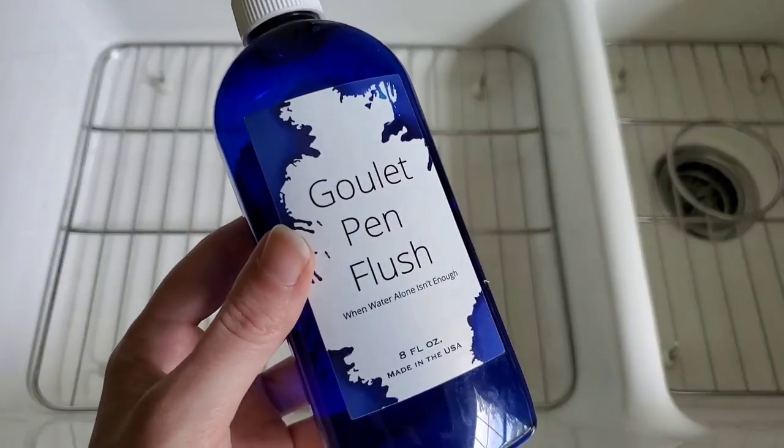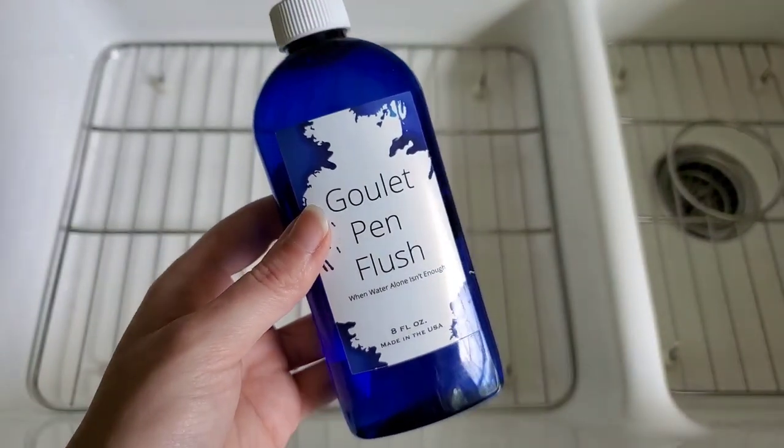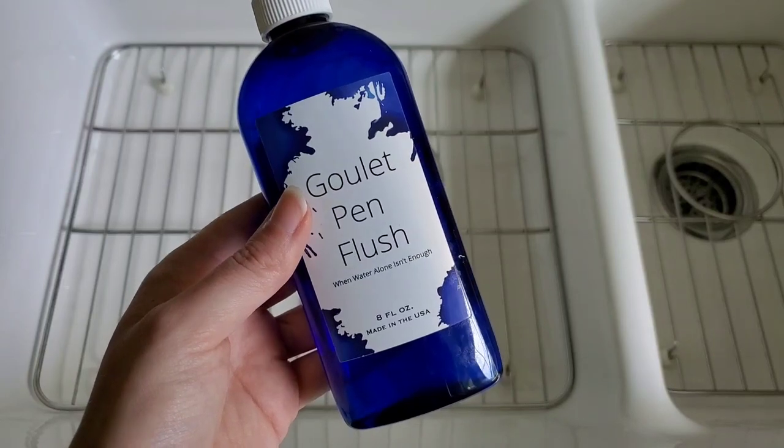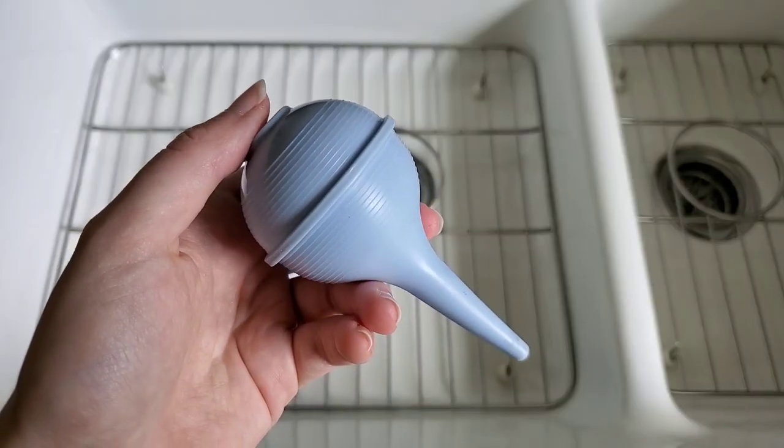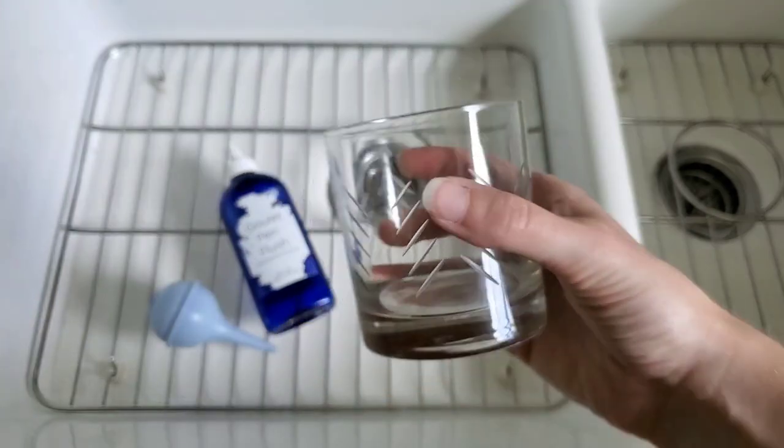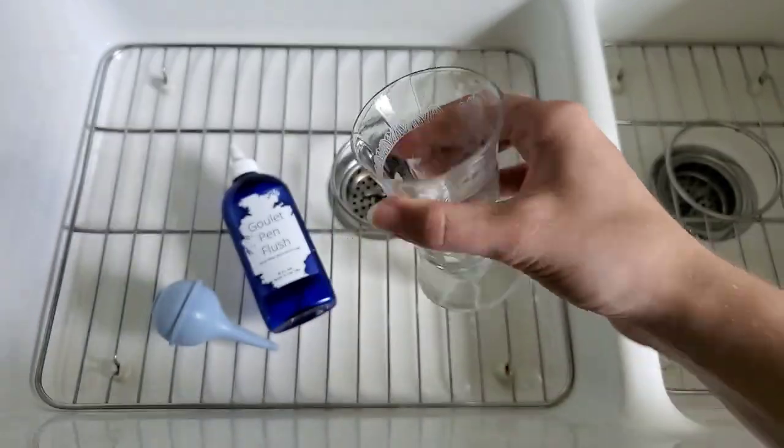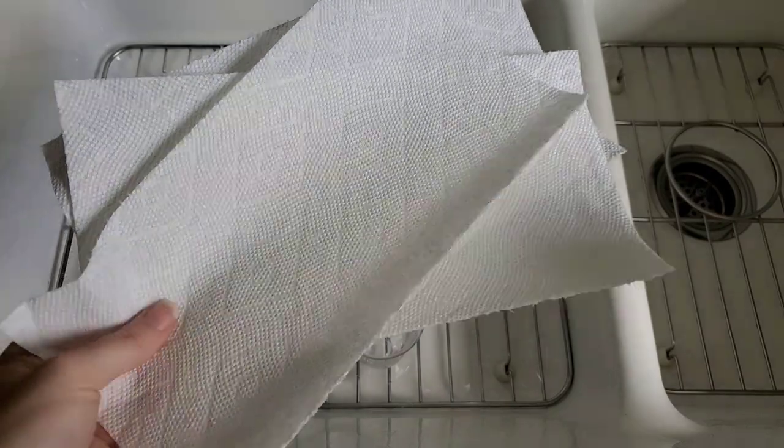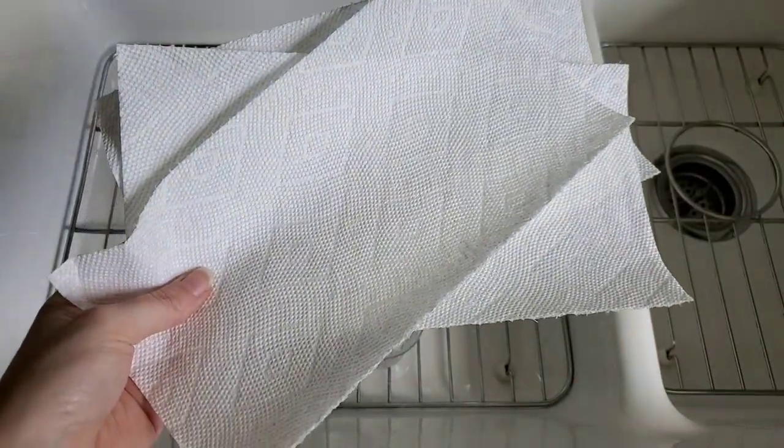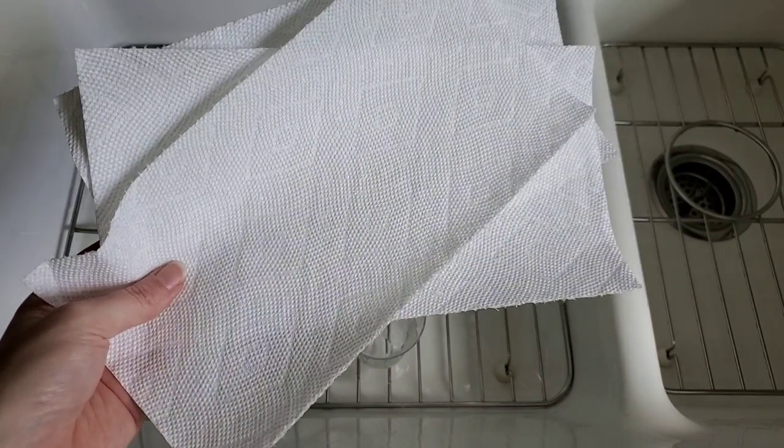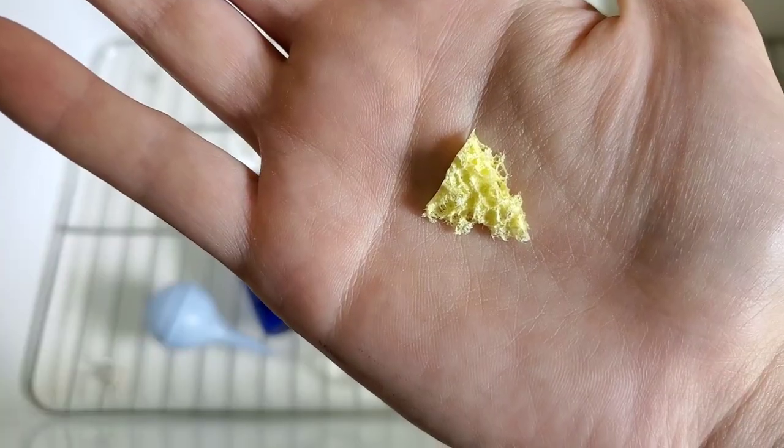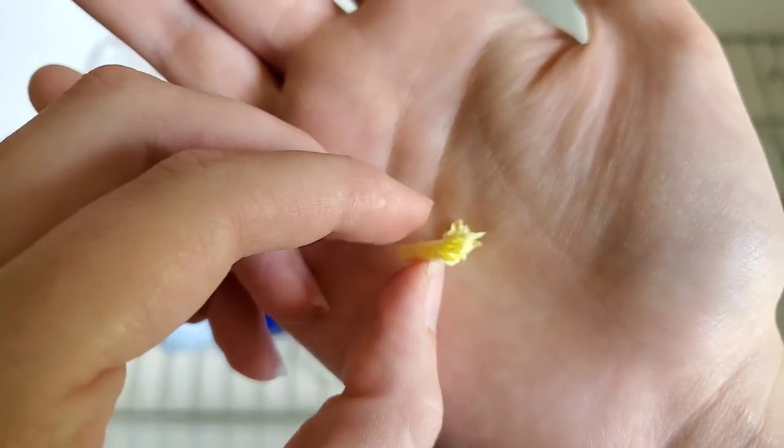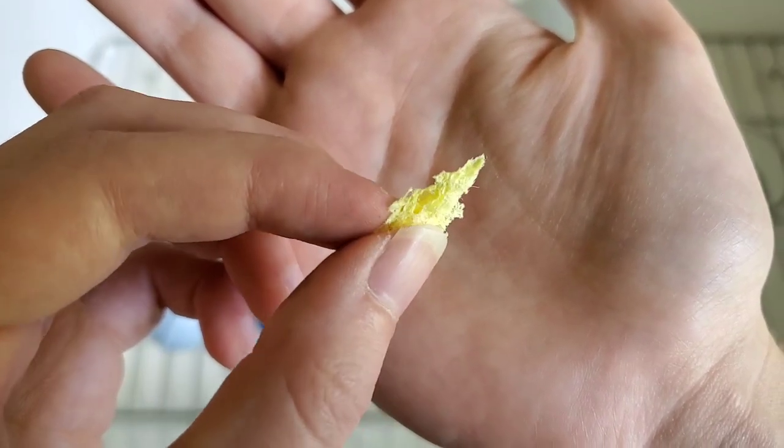I have Goulet Pens Pen Flush. This is for when water alone isn't enough, to encourage the excess or dried up ink in the pen to leave and leave it nice and clean. I have a bulb syringe to flush the pen nib out, a few glasses to hold the water while I'm cleaning the pen and to soak the pen itself in, some paper towels, and this piece of sponge that I cut from a larger sponge to clean between the clip of the pen and through little crevices.